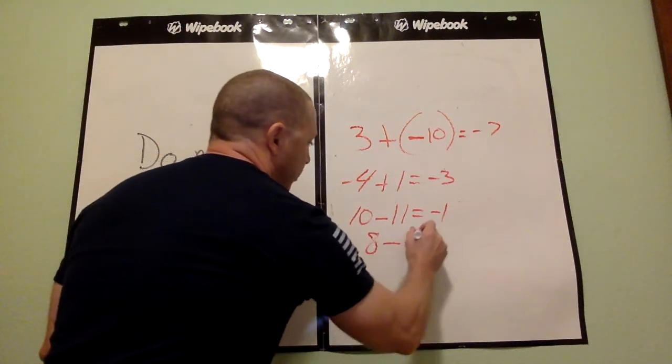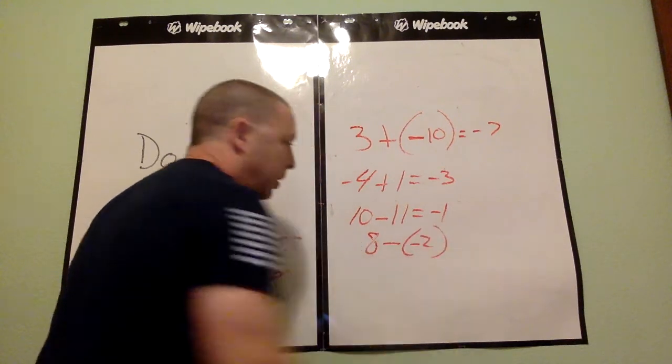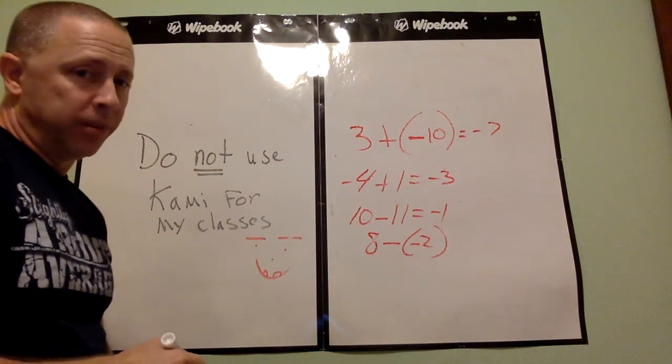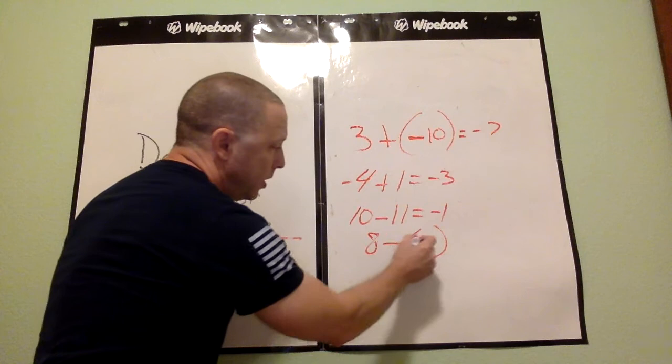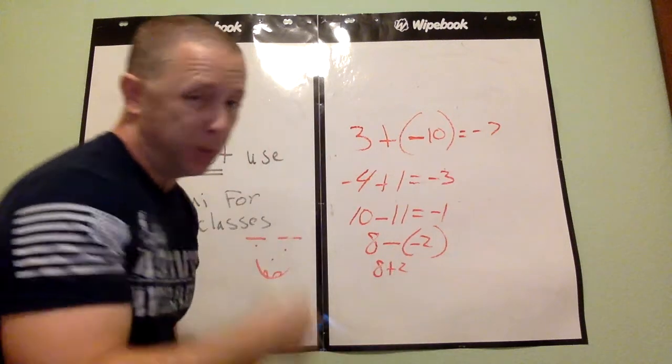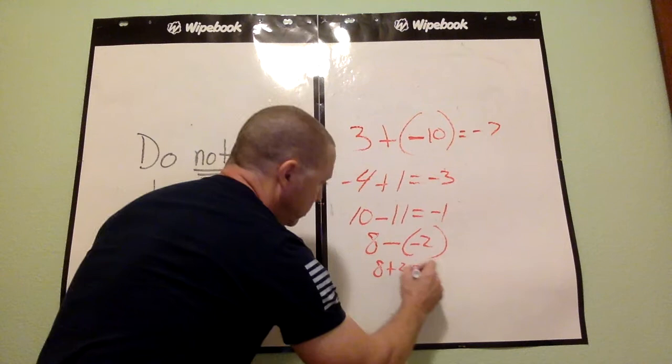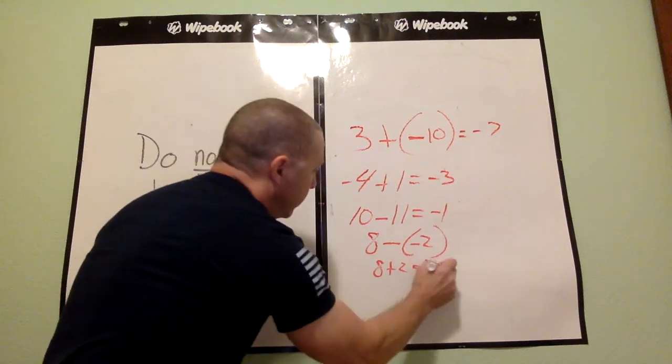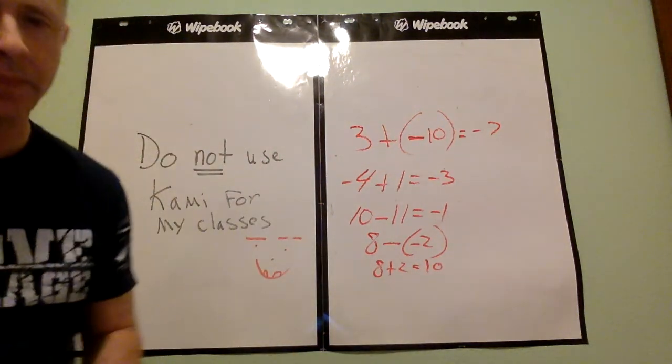But there are certain things you need to look for. Let's say 8-(-2). Now the double negative rule comes into effect. This becomes positive. So it becomes 8+2. Well, 8+2, as you know, I hope, is 10. And you're done.